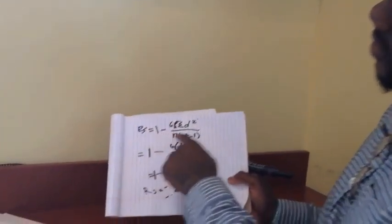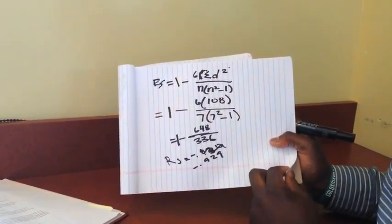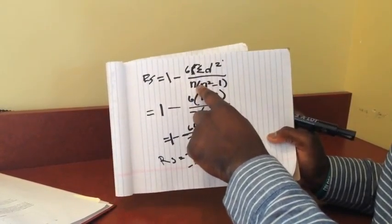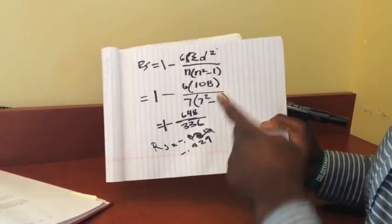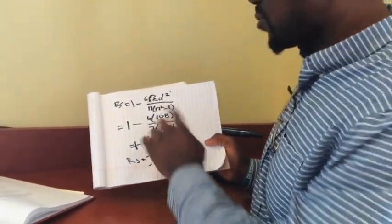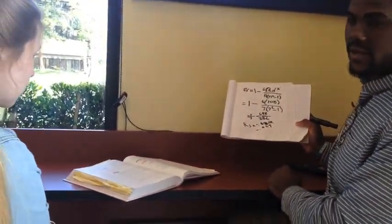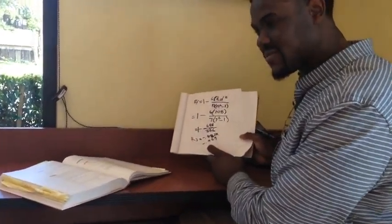We're wrapping up the problem, basically. So we used our formula, rs equals 1 minus 6 times the sum of d squared, and then we also used our n, and we multiply it. We did our n squared minus 1. So we plugged in our numbers in, and we did that, and we used the formula, and we got negative 0.929.